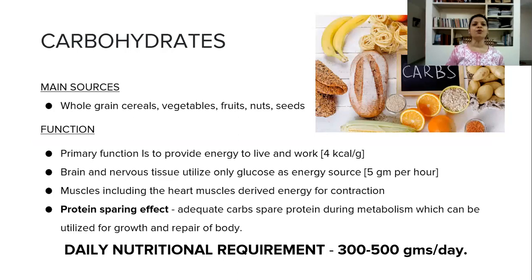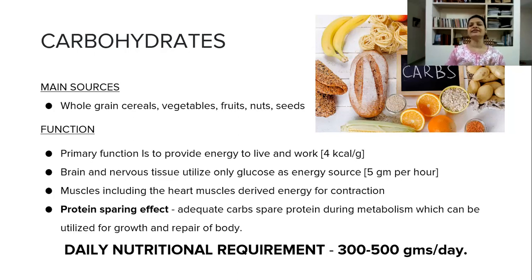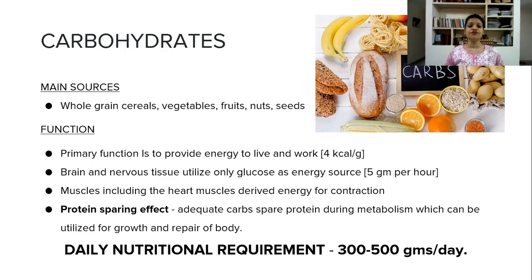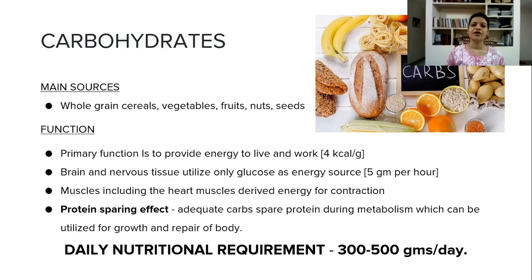The main sources of carbohydrates are whole grains, cereals, vegetables, fruits, seeds, and nuts. The main function is to provide energy — one gram of carbohydrate gives four kilocalories of energy. This energy is required for every function, mainly for the brain and nervous tissue, and also for the muscles including heart muscles, both voluntary and involuntary, and all our daily activities.